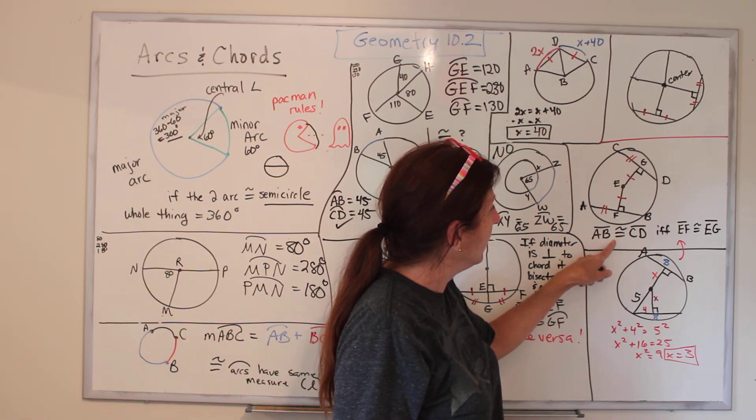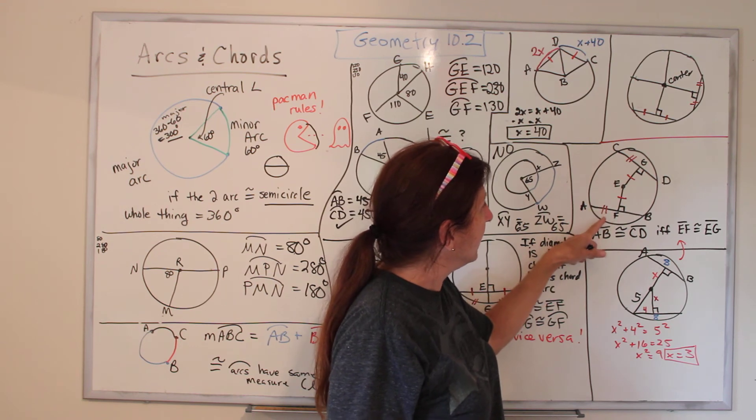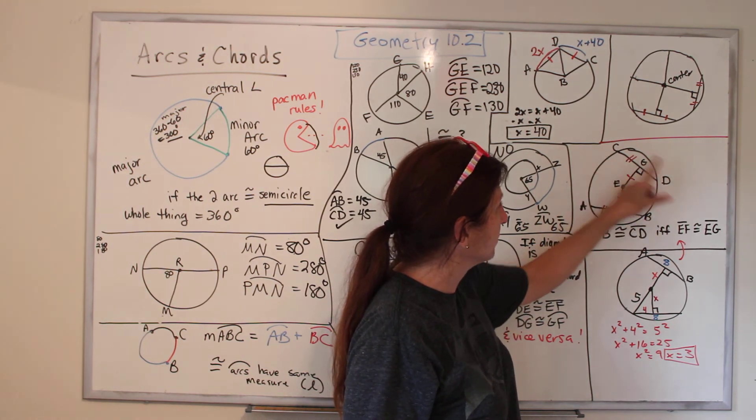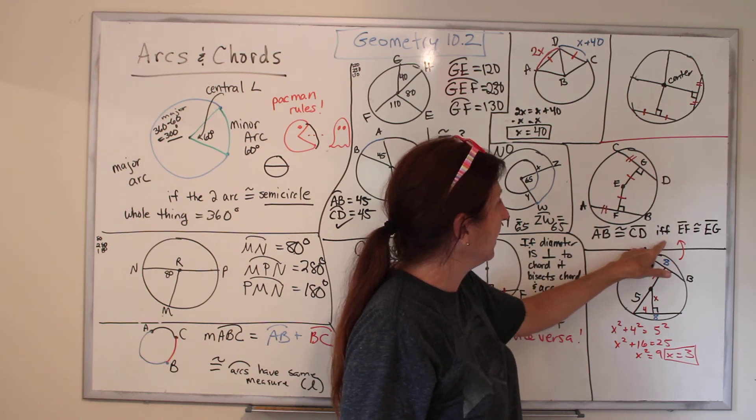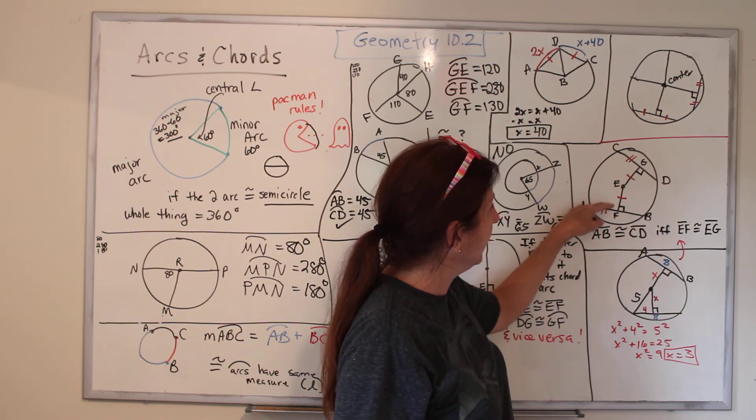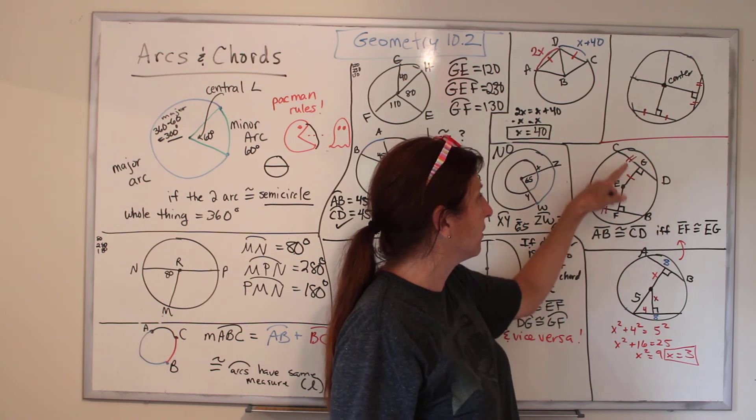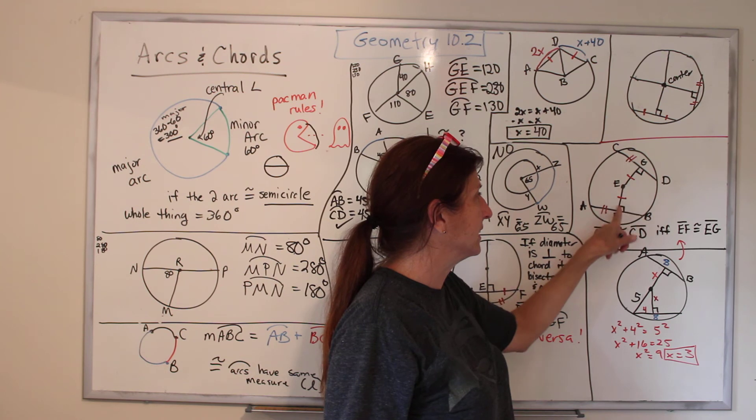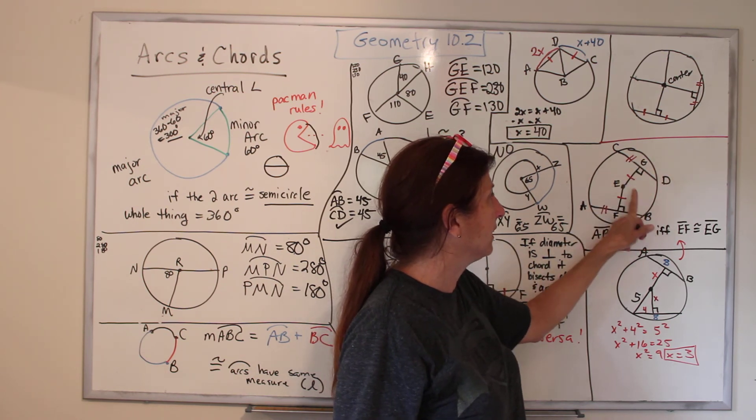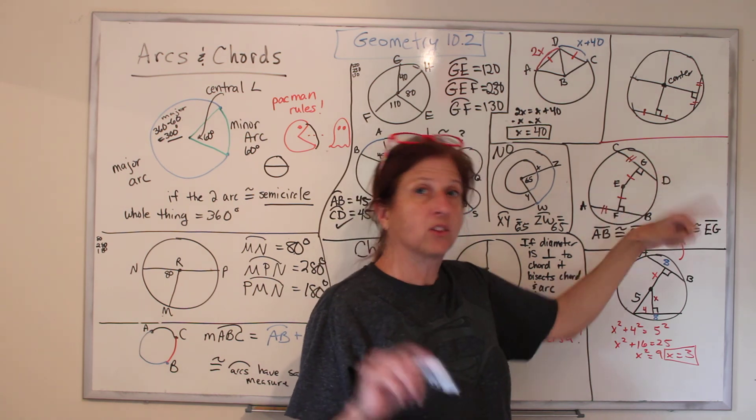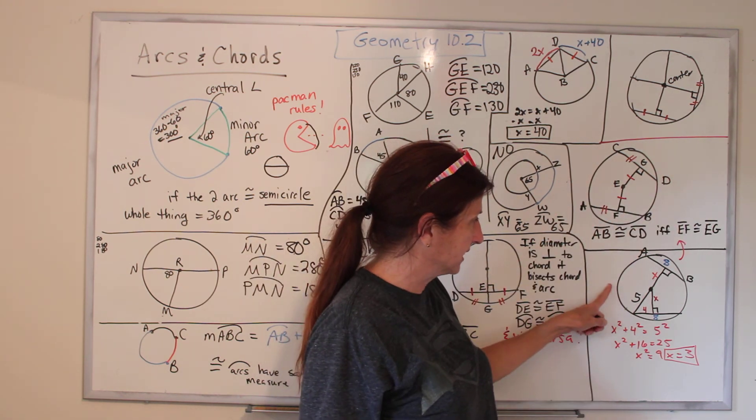So here's another one. It's that if AB equals CD, if and only if EF equals EG. So two chords are equal to each other. When you draw a line from the center to the chord perpendicularly, those lines will also be equal to each other. Not to the chord, but to each other.